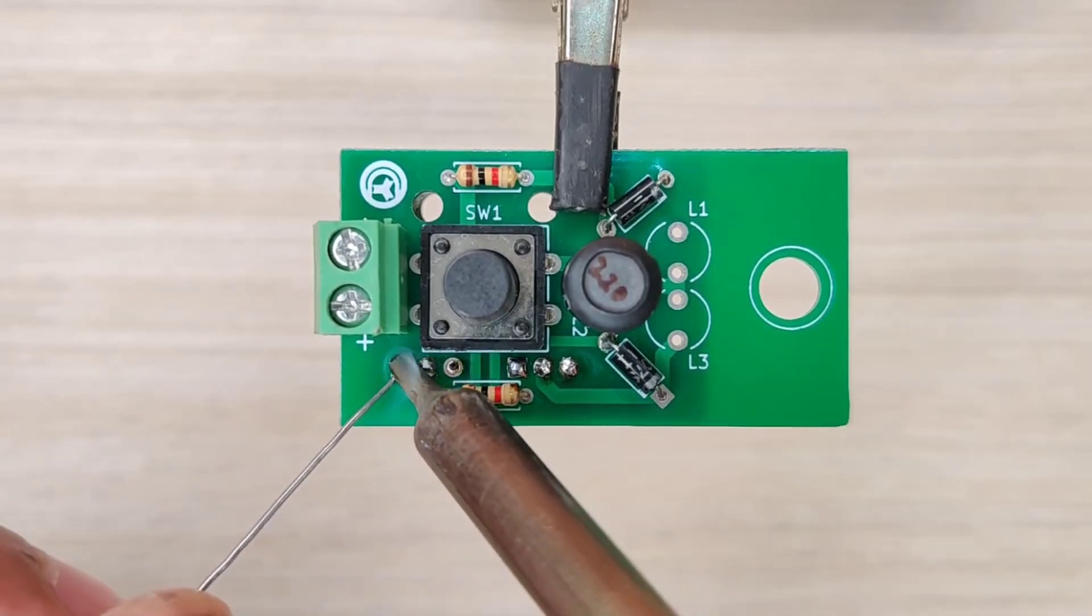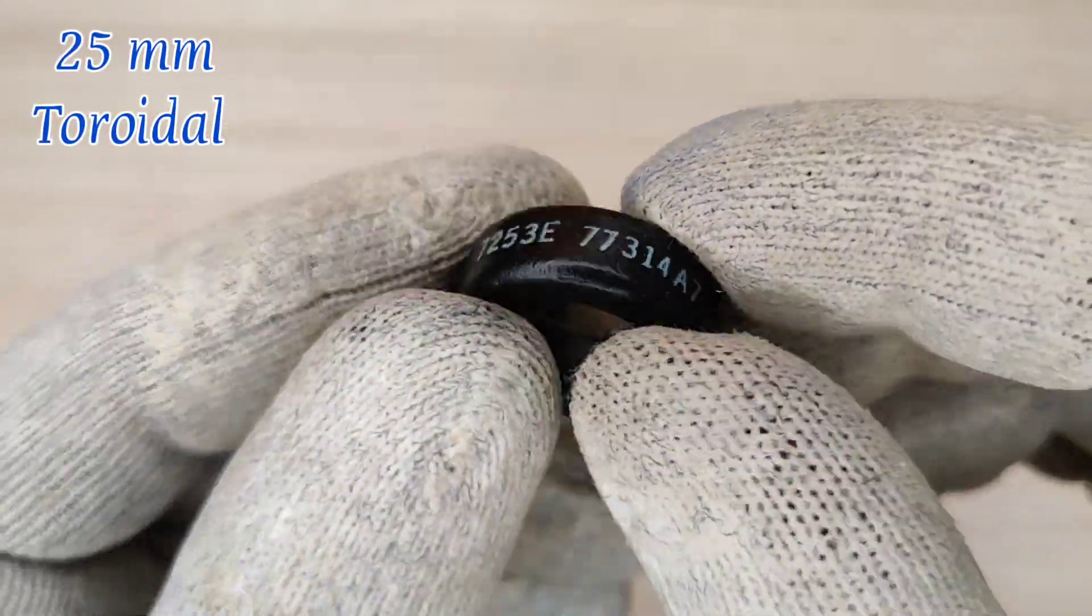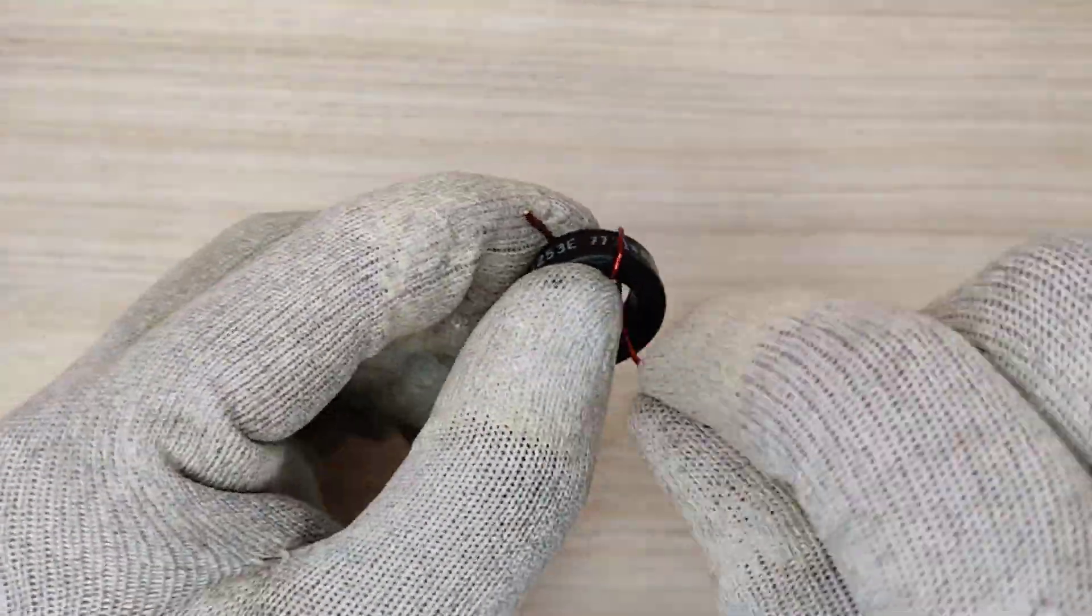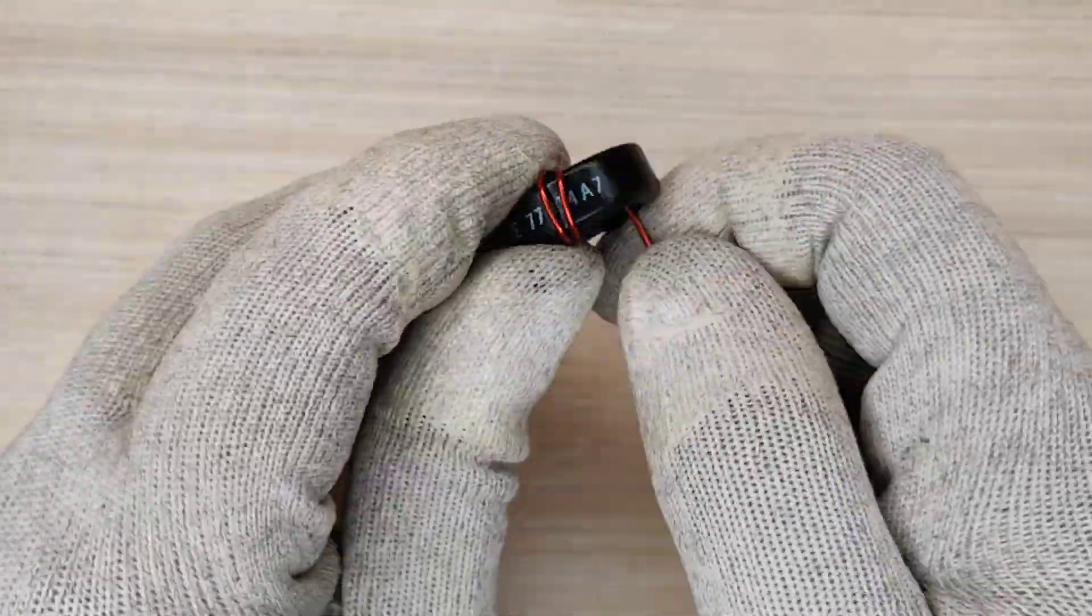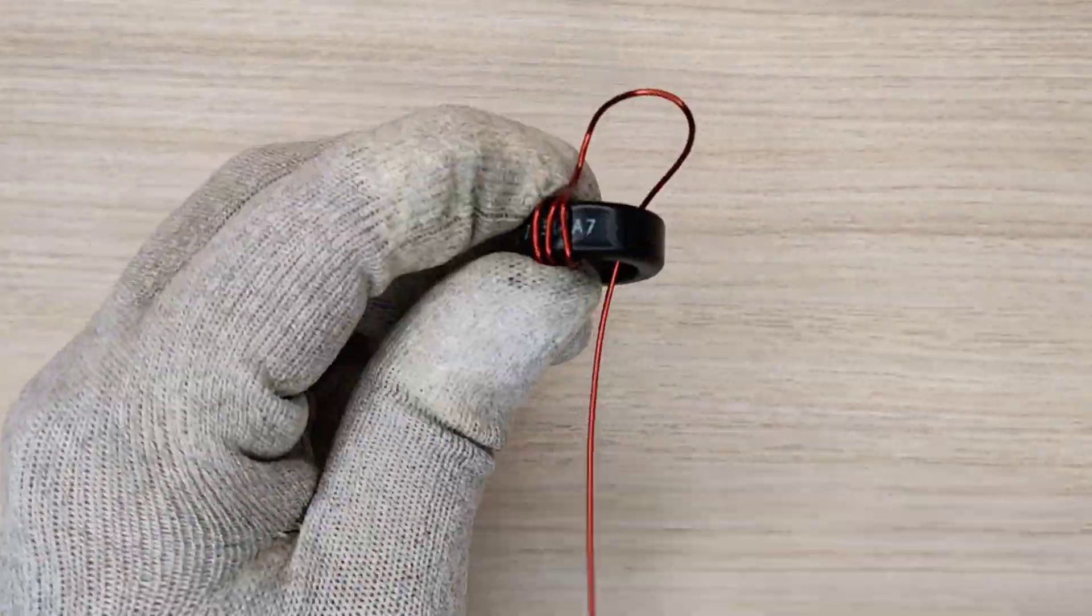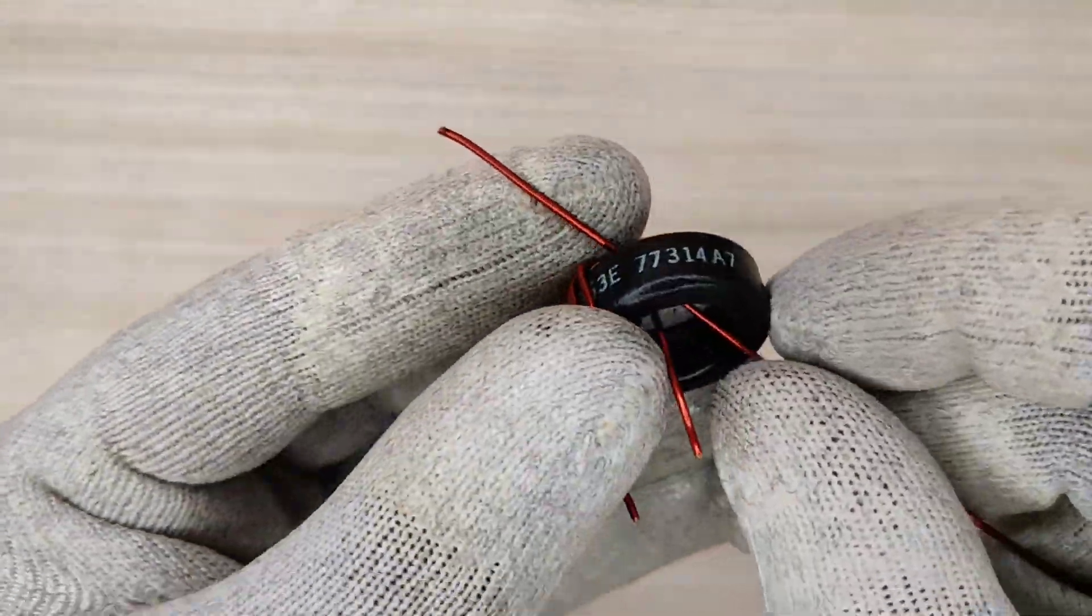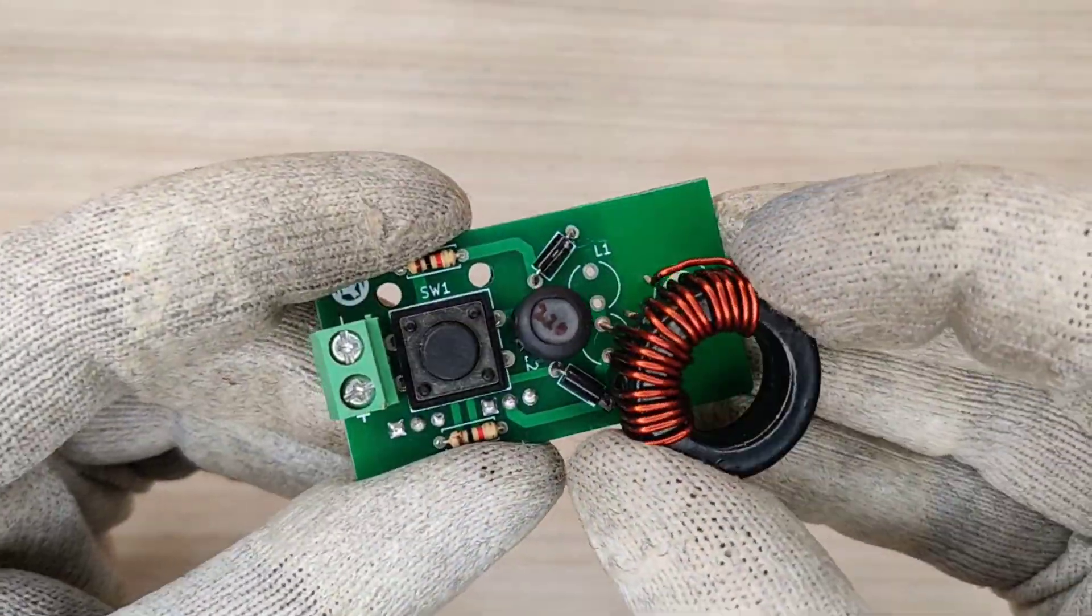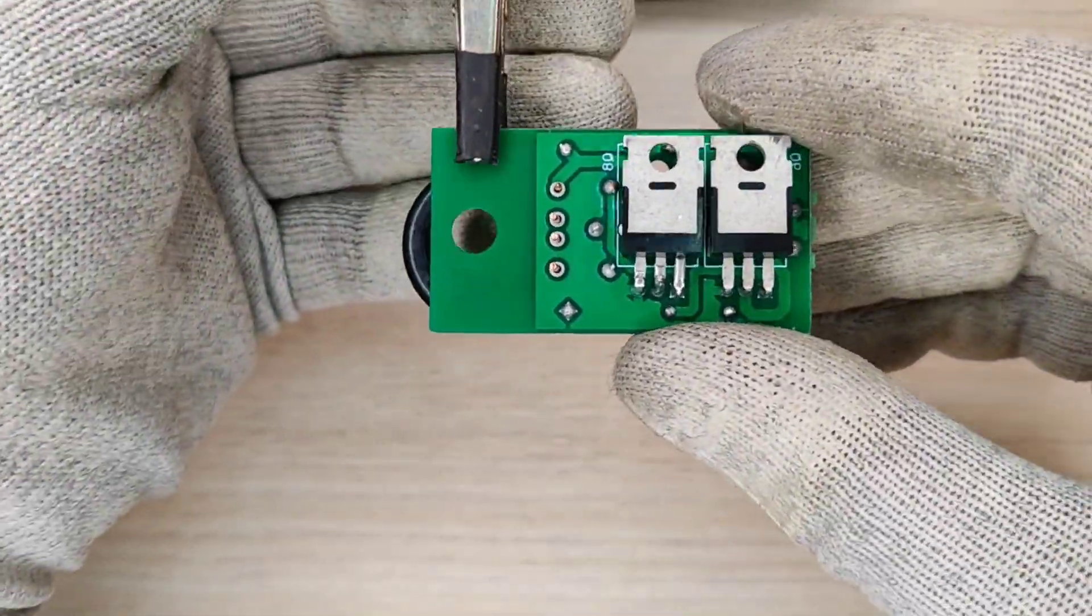I used a 25mm ferrite core to make the inductor and used 0.8mm enamel copper wire for winding. You can first wind up to five turns of wire in coil, then by making a center point loop, wind another five turns of wire. Then place it over here and now solder it with the PCB.